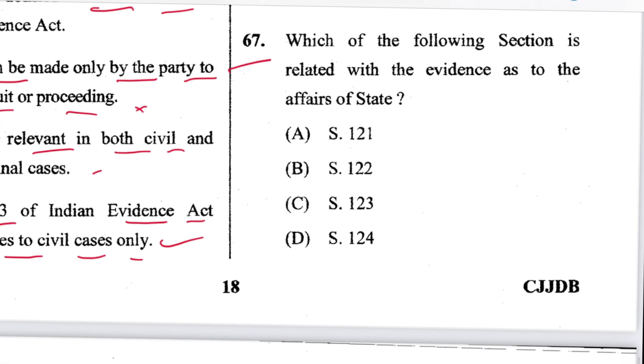Question 67: Which section is related to evidence as to affairs of state? Section 123. C is the answer.